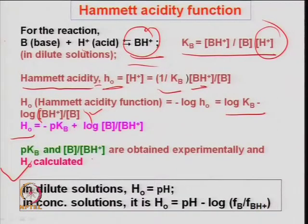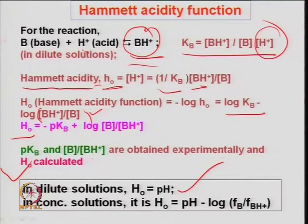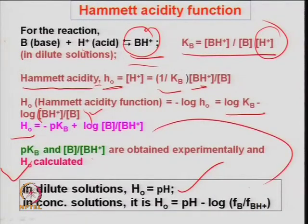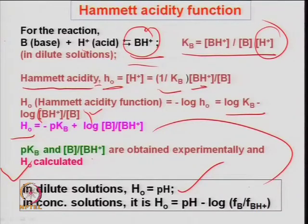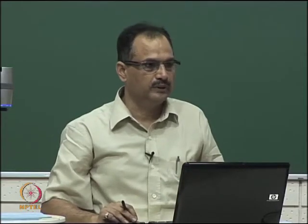For dilute solutions, this Hammett acidity function equals pH. For concentrated solutions, it is pH minus log of f_B divided by f_{BH⁺}, the same formula but written in terms of molar concentration — of the base and BH⁺ — in terms of molality, or in terms of the hydrogen ion concentration which can be determined from the solution.